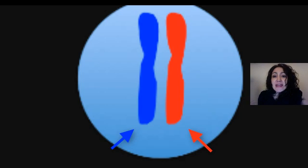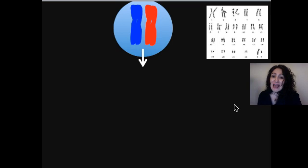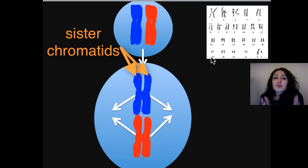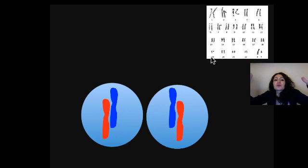This is a cartoon of a cell. It has one chromosome from mom and one chromosome from dad. We first have to duplicate these chromosomes, which means they now have sister chromatids. These sister chromatids will line up in the middle of the cell — a perfect situation — and then we can split the chromosomes apart and get two identical daughter cells. It's a beautiful thing.